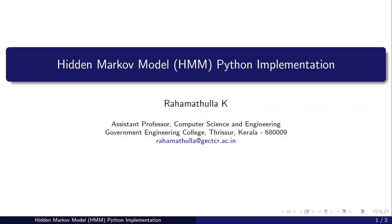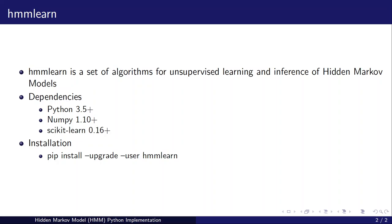In this lecture we will discuss hidden Markov model implementation using Python. For that we will be using hmmlearn, which is a set of algorithms for unsupervised learning and inference of hidden Markov models. It was previously a part of scikit-learn but is now a separate module, so it will not be available directly in Jupyter Notebook or Google Colab — you will have to install it. The dependencies are Python 3.5 or above, NumPy 1.10 or above, and scikit-learn 0.16 or above.